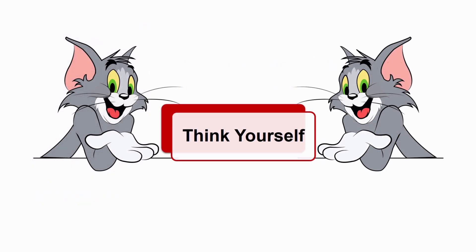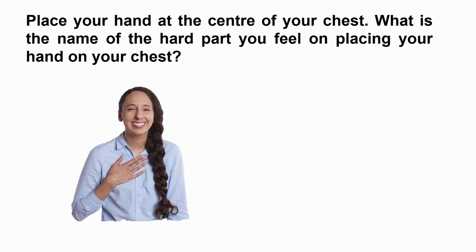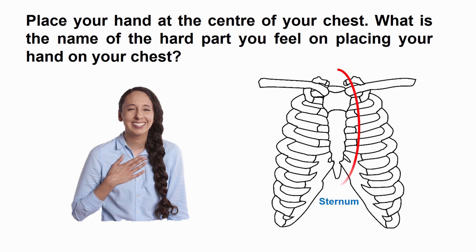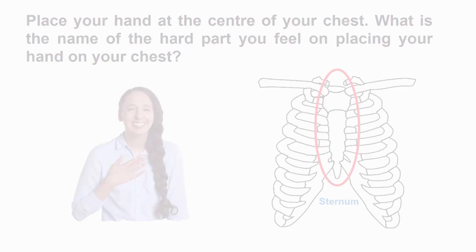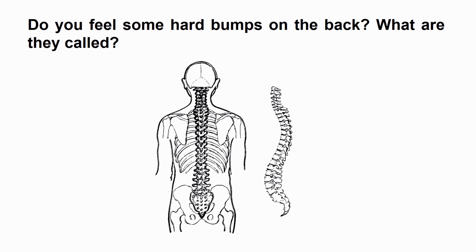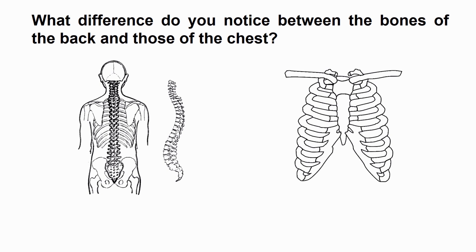Think yourself. Place your hand at the center of your chest. What is the name of the hard part that you feel? Do you feel some hard bumps on the back? What are they called? The hard bumps on the back are called vertebrae. What difference do you notice between the bones of the back and those of the chest? The bones of the back are irregular, while the bones of the chest are regular.